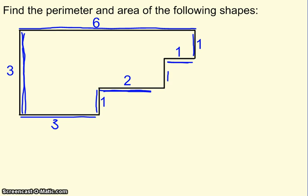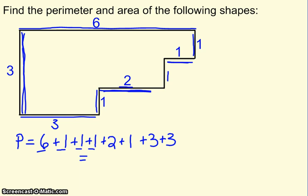So perimeter will be fairly easy. All we have to do is add up all of those sides, so just be careful that you don't miss anything. I took all of my sides, starting at the top, going clockwise around. 6 plus 1 plus 1 plus 1 plus 2 plus 1 plus 3 plus 3, and that adds up to 18 units. Now in this chapter, labels are going to start mattering. If teachers haven't started docking points for mislabeling, they will start doing it this chapter.